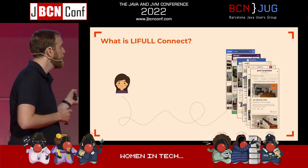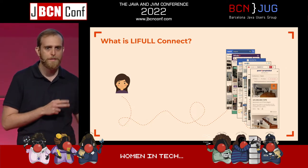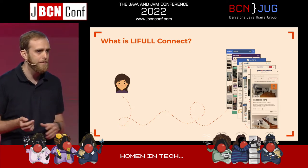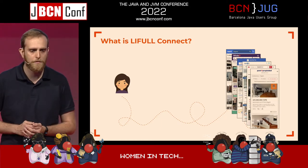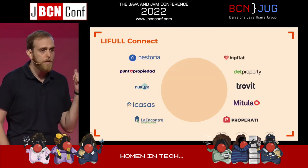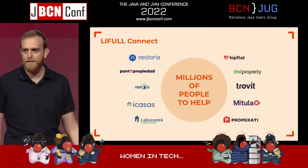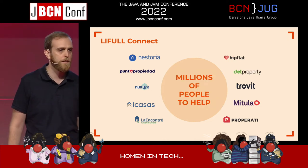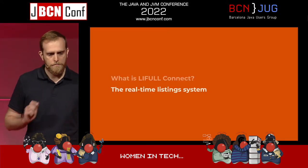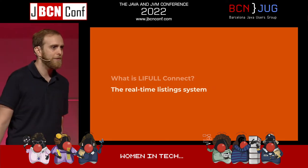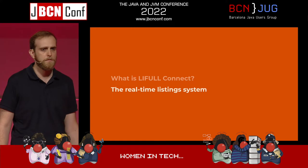How do we help people? Through our portals. We got plenty of portals where people can go, compare the properties that are listed there, and connect with the people that are selling them. We got plenty of sites and lots of people to help, because there's a big audience that reaches our websites. I'm going to tell you this journey to the real-time listing system that we built during the last two and a half years.